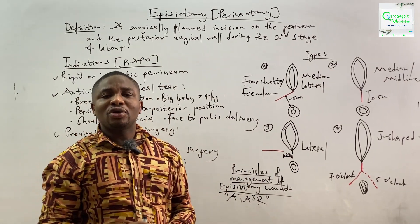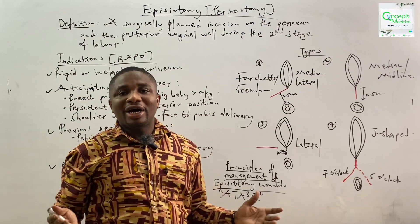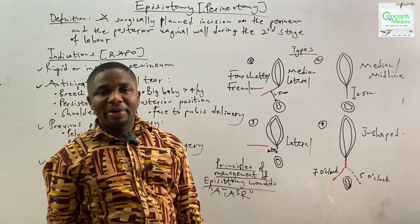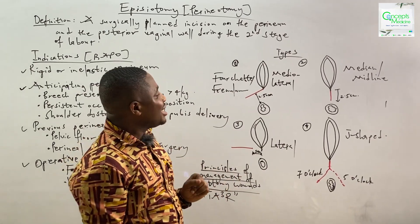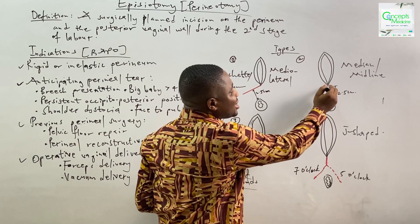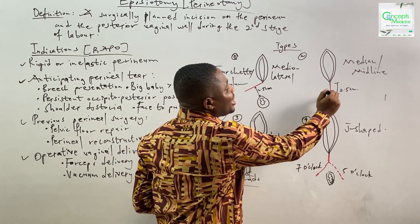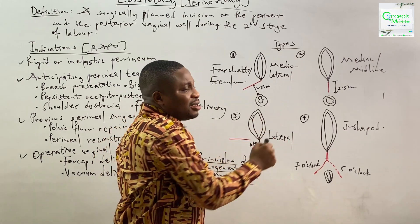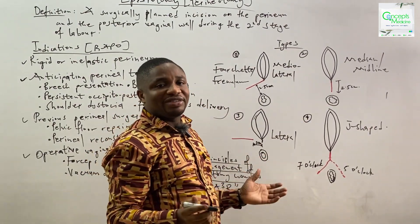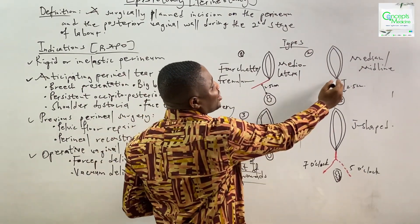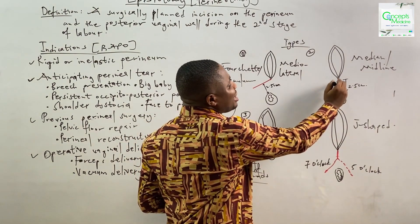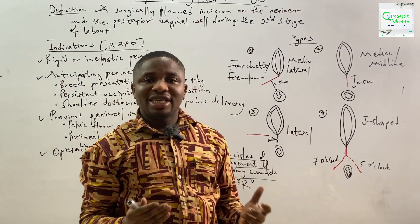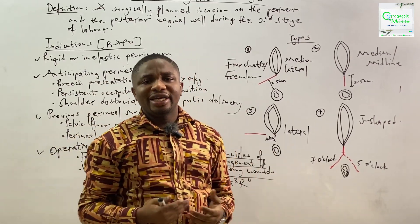The mediolateral episiotomy is the most commonly used episiotomy worldwide. The second type is the median or midline episiotomy. For the midline episiotomy, the incision begins from the center of the fourchette and extends posteriorly in the midline for about 2.5 centimeters. The only disadvantage of the median or midline episiotomy is that it predisposes the patient to a perineal tear in the future.